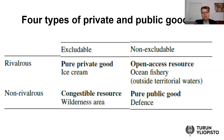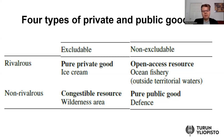Here are four examples classified in these two categories, from the Perman et al. textbook. As an example of a pure private good, there is ice cream: it is rivalrous in the sense that if I eat the ice cream, there is less available for you; and it is excludable — if I own the ice cream, I don't have to share it with anyone.